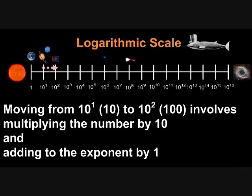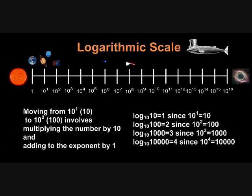Moving from ten to the first (ten) to ten to the second (one hundred) involves multiplying the number by ten, but adding to the exponent — the position on the line — by one. Looking at logarithms: the log base ten of ten is one, since ten to the one power is ten. The log base ten of a hundred is two, since ten squared is a hundred. The log base ten of a thousand is three, since ten to the third is a thousand. So essentially the logarithm base ten of a number gives us the exponent, or the position on the scale.